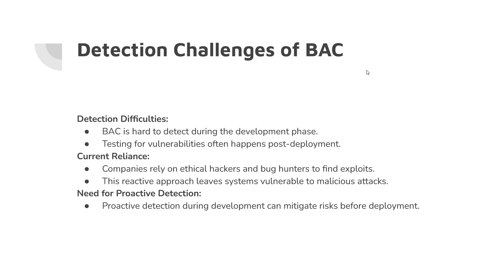What are some detection challenges we see with broken access control? It is very hard to detect during the development phase, and testing for vulnerabilities often happens post-deployment through ethical hackers and bug hunters. Companies will send their final product to third parties to try and find exploits, then launch updates to address them. The need for a proactive approach is where our methodology comes into play — if we can use artificial intelligence to detect issues as they're happening rather than waiting until the end, we can save businesses a lot of time and money.